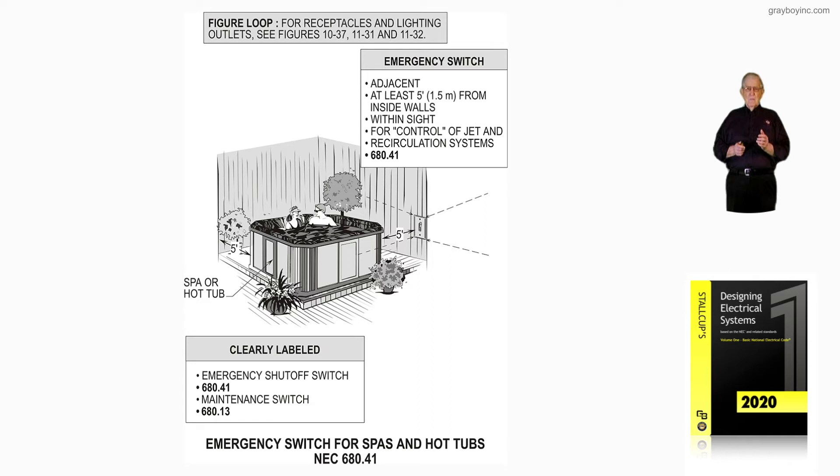Notice, clearly labeled in the boxed-in information, the emergency cutoff switch can be found with its requirements in 680.41. You also have a maintenance switch, which is in accordance with 680.13. So there are two types of switches involved here.